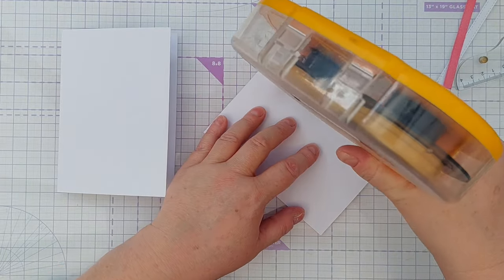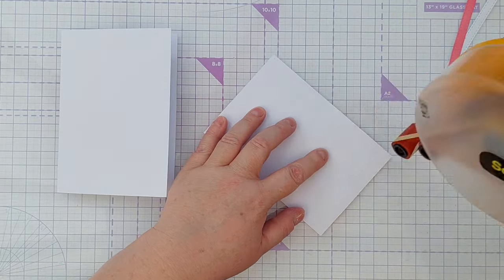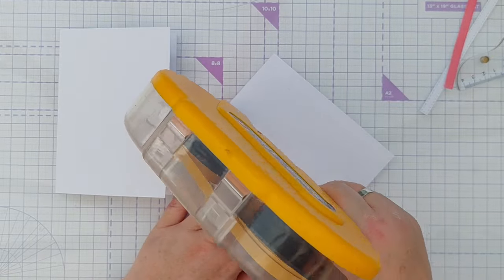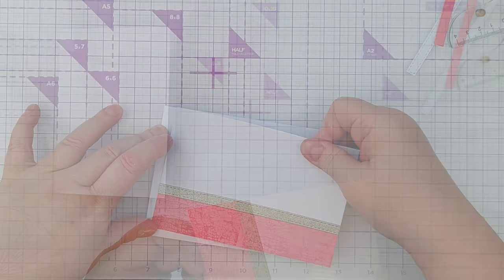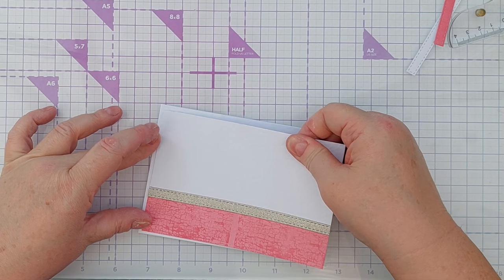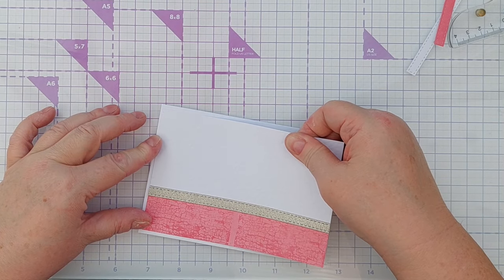Once the strip was stuck down straight, I snipped the overhang off with a pair of scissors, put some tape runner on the back of the panel, and added the panel to a hammered textured white card blank.